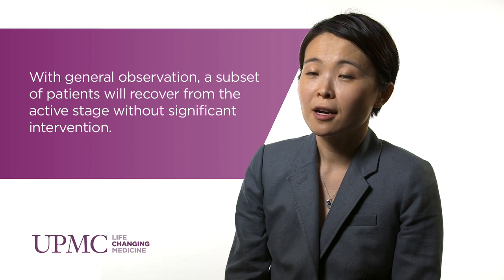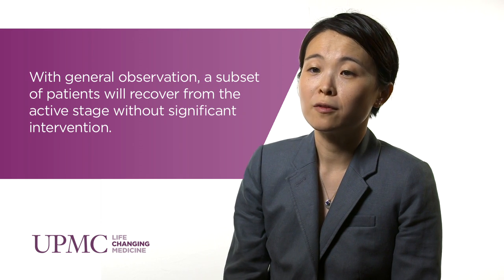Thyroid orbitopathy can be defined as two phases. The active phase is the inflammatory phase where the orbital and periorbital region tissue is undergoing inflammation. Traditionally, it's been thought to last about a year. We observe patients to ensure they don't progress to severe changes causing visual loss. Then it becomes an inactive or fibrotic stage, when inflammation has stopped but permanent damage — increased volume of muscles and fat in the orbit — has already occurred.